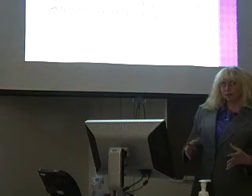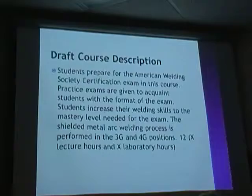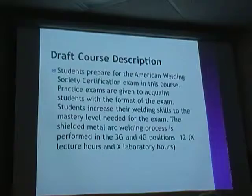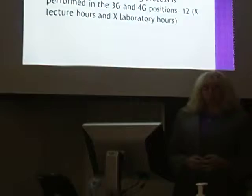Taking all of that, what I would suggest for a course description is: students prepare for the American Welding Society certification exam in this course. Practice exams are given to acquaint students with the format of the exam. Students increase their welding skills to the mastery level needed for the exam. The shielded metal arc welding process is performed in the 3G and 4G positions. I put the codes at the end — 12 because it's an occupational course — and we haven't figured out the lecture and laboratory hours yet.